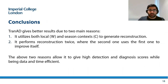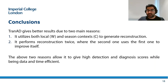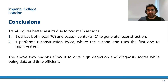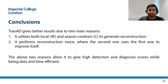To summarize, TRANAD gives much better scores compared to baselines for two reasons: first, that we feed both local and global contextual information; and second, that it performs reconstruction in two phases, where it uses the deviation scores generated through its first phase while generating reconstruction in the second phase.